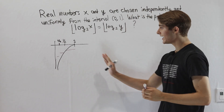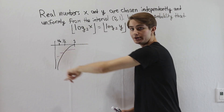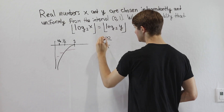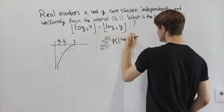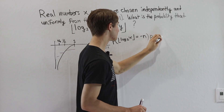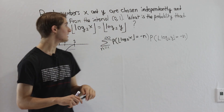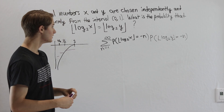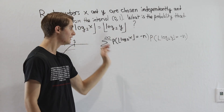We need to add up the probability that these two functions each equal negative 1, or each equal negative 2, and so on. We're looking at a summation — the sum from n equals 1 to infinity. For each term, we take the probability that the floor of log base 2 of x equals negative n, then multiply by the probability that the floor of log base 2 of y also equals negative n, since we want two independent events to happen at the same time.